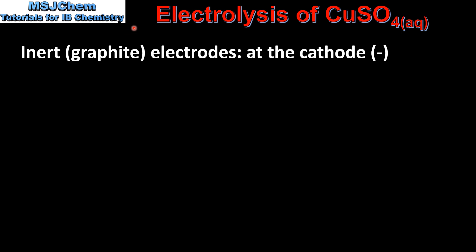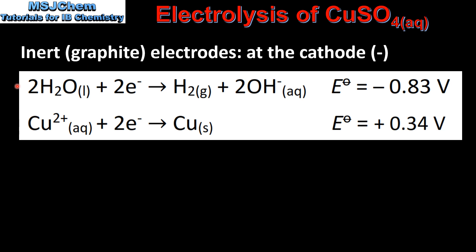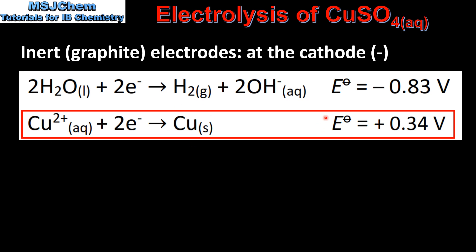Next we look at the electrolysis of copper sulfate solution using inert graphite electrodes. At the cathode there are two possible reactions: the reduction of water to form hydrogen gas, or the reduction of copper(II) ions to form copper metal. The reaction with a more positive electropotential will take place, therefore we'll have the reduction of copper(II) ions to form copper metal.